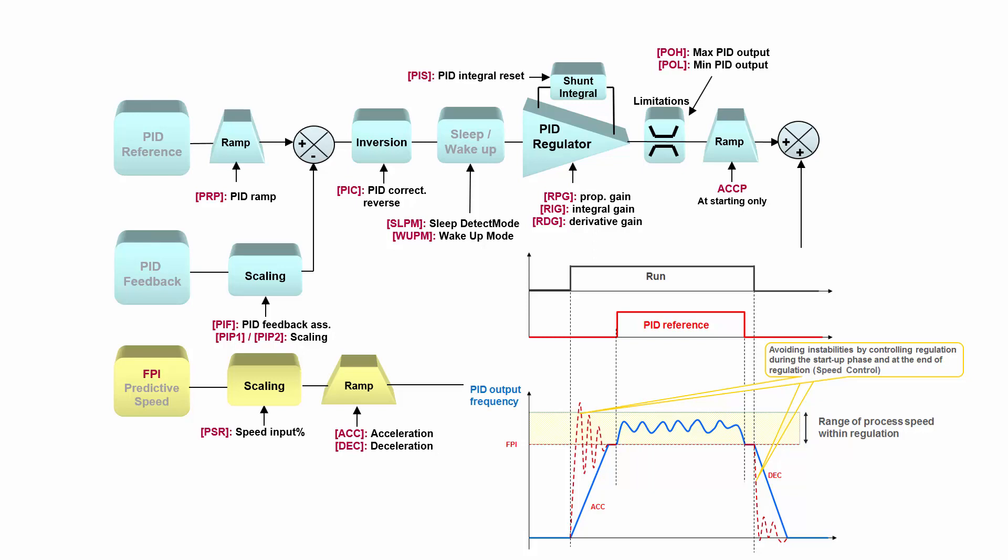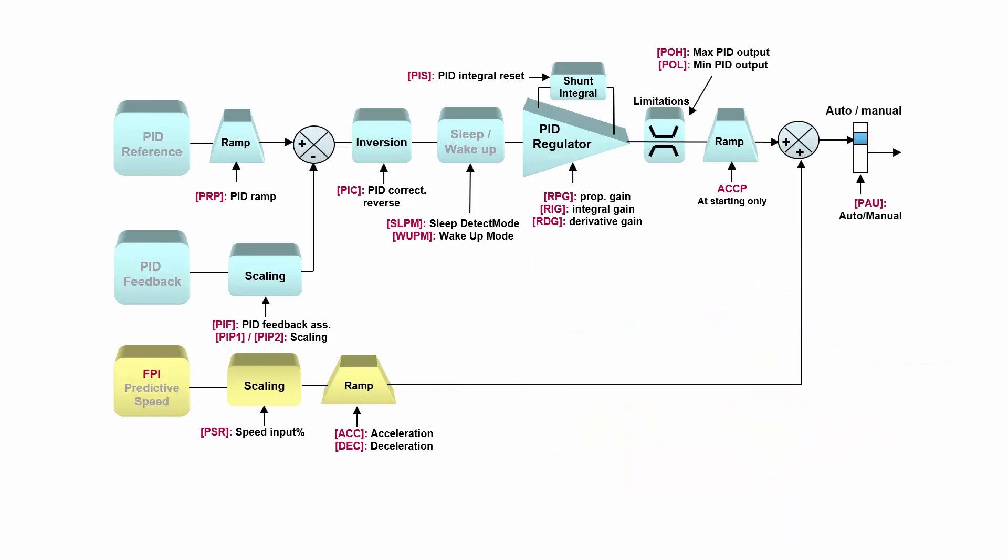And then output of the summing point enters the drive. Additionally, we can disable or let's say make it auto/manual work of our PID output, so we can have manual speed reference which enters the variable speed drive.